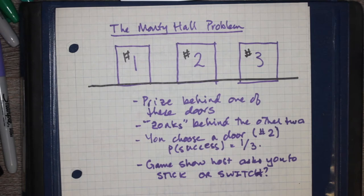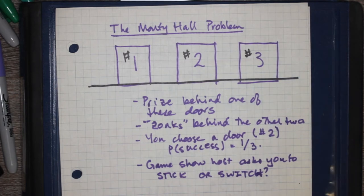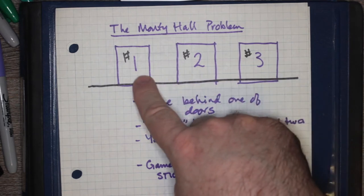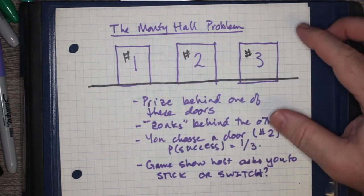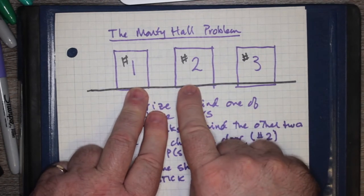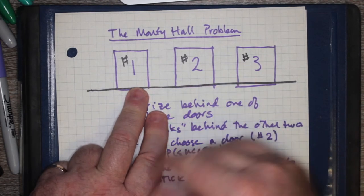Now Monty Hall was the host of a game show called Let's Make a Deal, and it's attributed to him because every week back in the 70s and 80s he would have as his final round for his top prize-winning contestant the ability to choose between door number one, door number two, and door number three for some kind of fabulous grand prize.